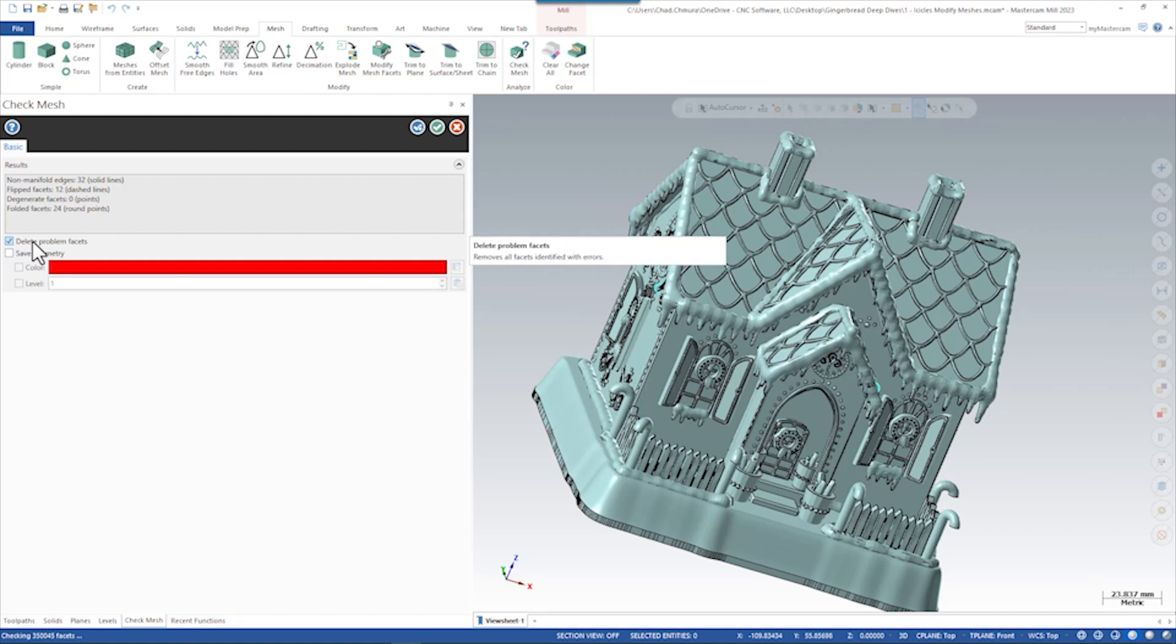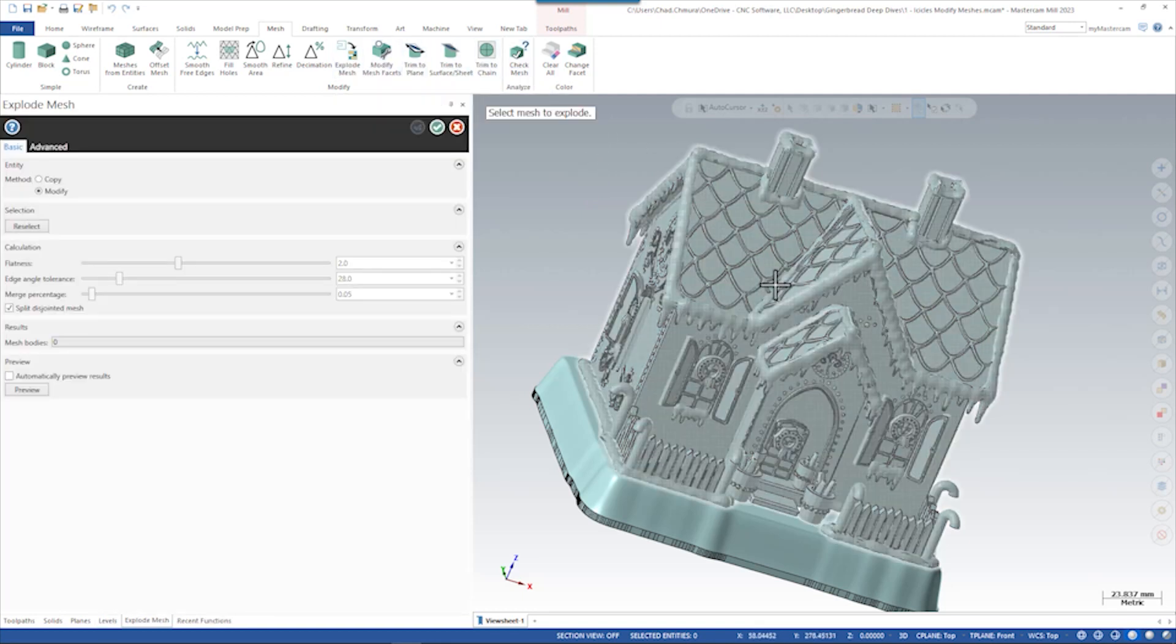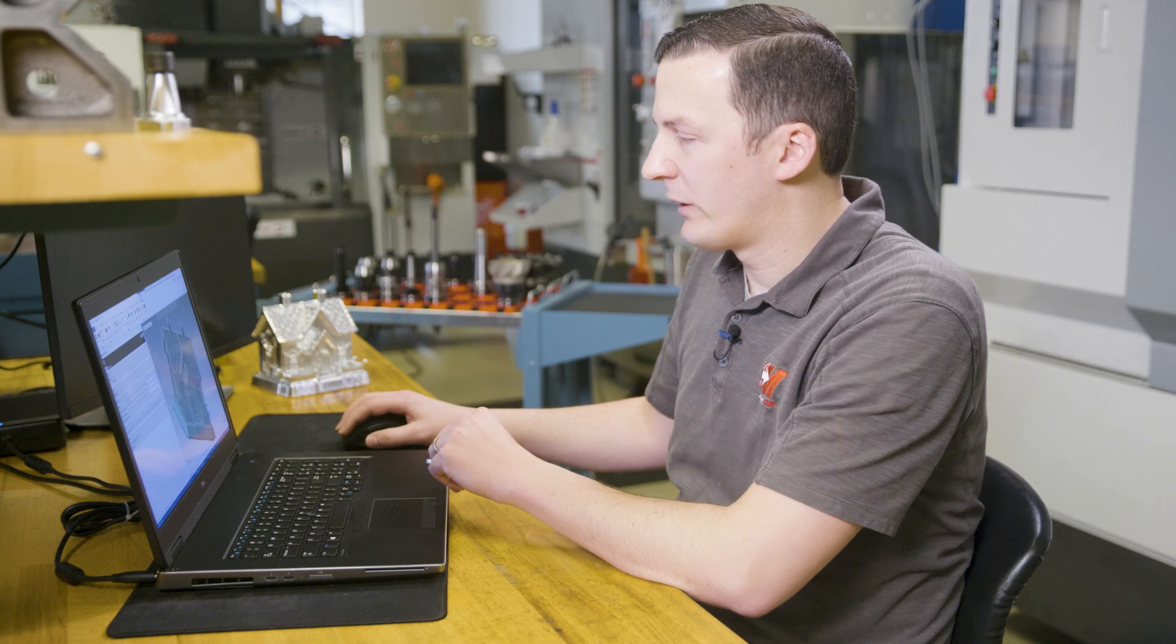Luckily, Mastercam will automatically delete these problem facets, meaning we can just move forward. Now we can run explode mesh on this main body. Explode mesh will generally take a prismatic mesh file and turn it into simple faces that are a little bit easier to work with.